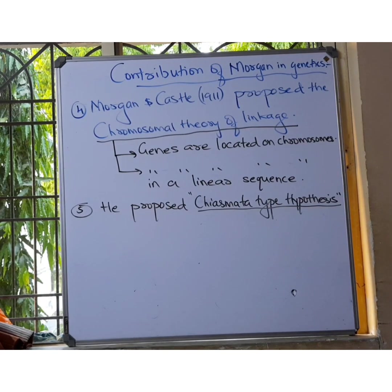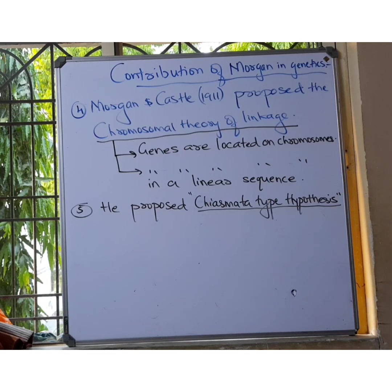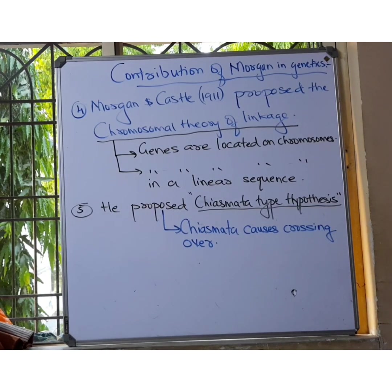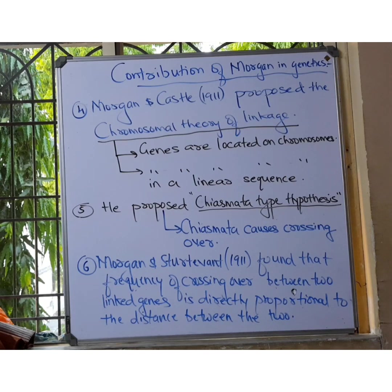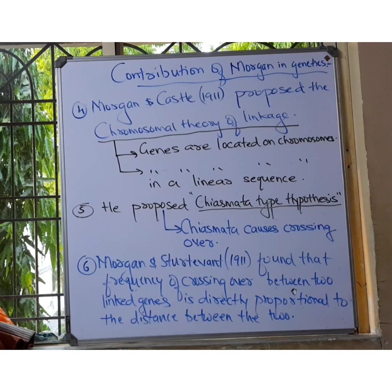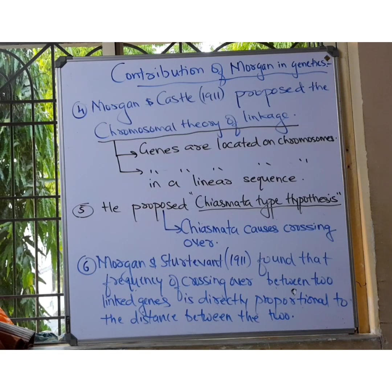Contribution number five: Morgan proposed the chiasmata type hypothesis. The chiasmata type hypothesis states that crossing over occurs at a chiasmata — a chiasmata form that we studied in cell division and meiosis. So chiasmata causes crossing over.